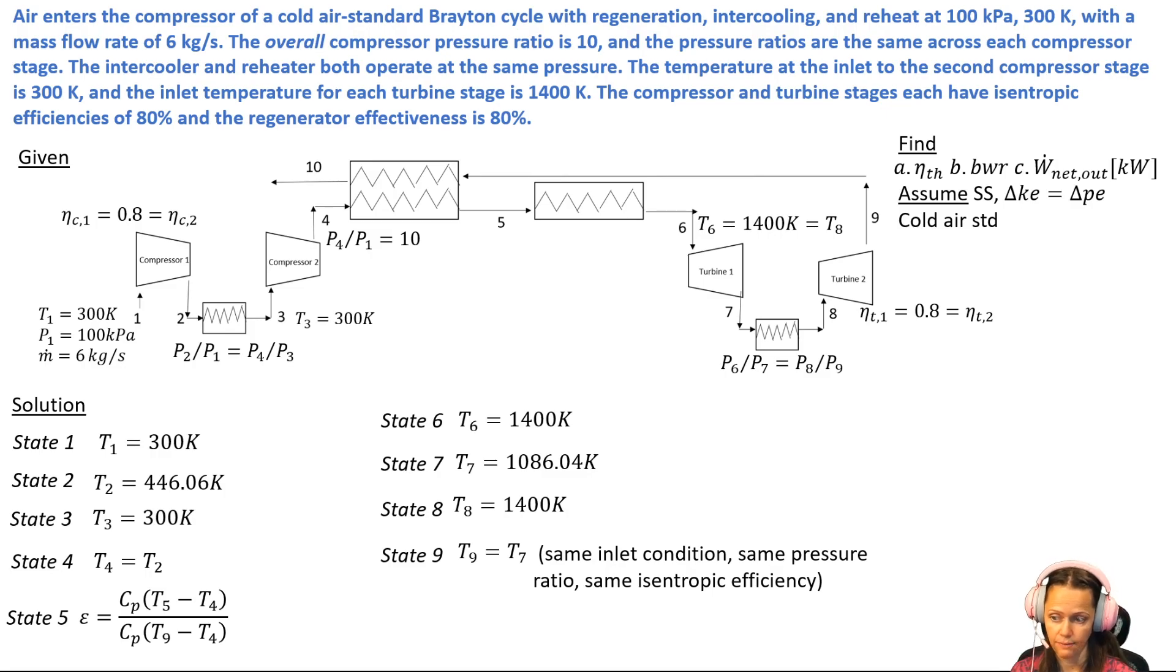I could go through the same sort of manipulations to find T9 that I did for T7, but it's kind of the same thing as the compressors that we saw for state 4. You'll see that if you plug in the numbers, you've got the same inlet conditions for each of those turbines and you've got the same operating conditions, same pressure ratio and same isentropic efficiency. So you'll see that T9 and T7 are exactly the same.